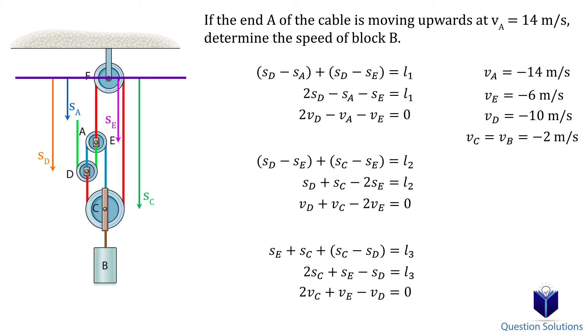Solving gives us the velocity C, and since the block moves with pulley C, they both have the same velocity. It's also negative, which means the block is actually moving up.